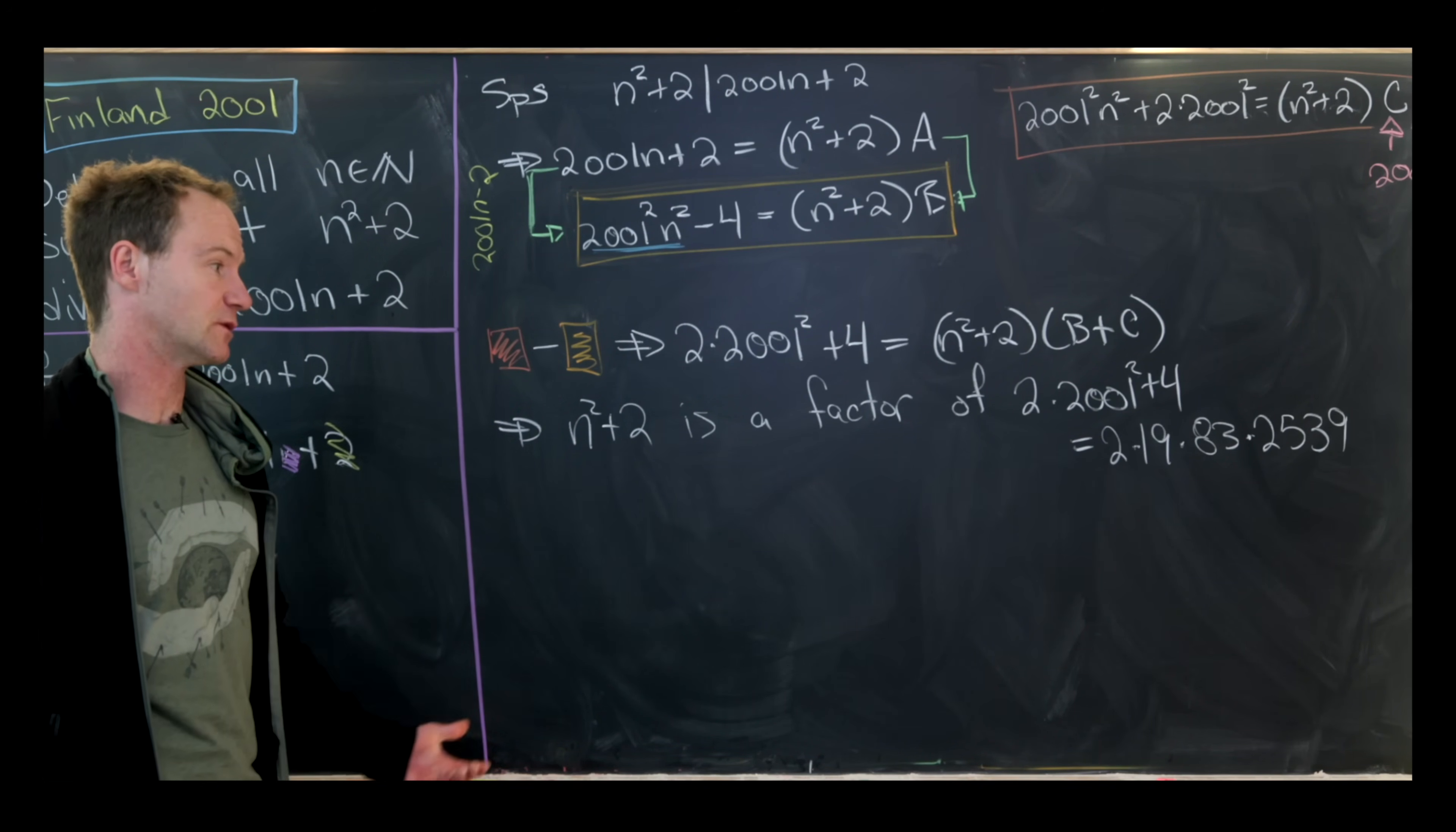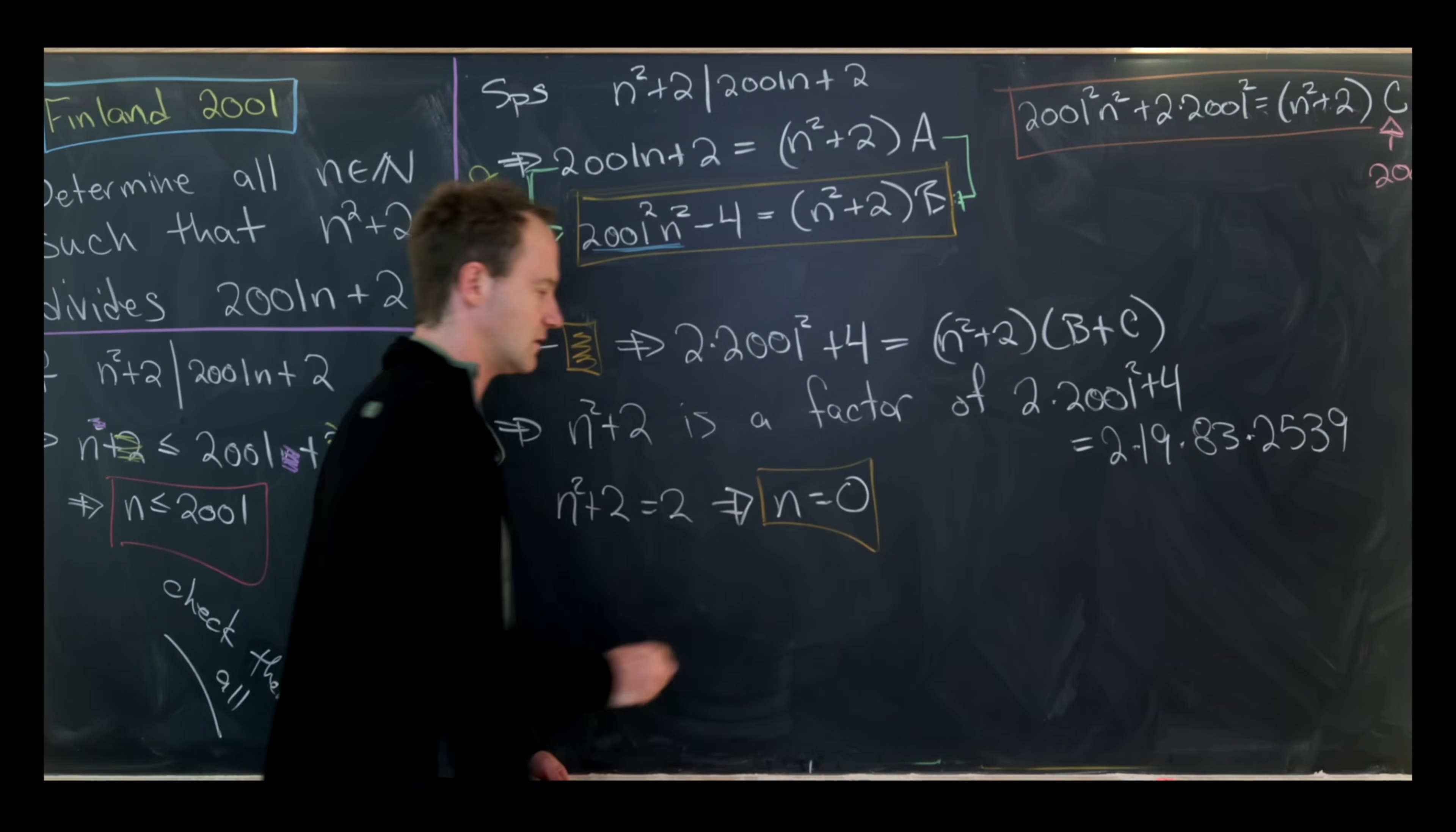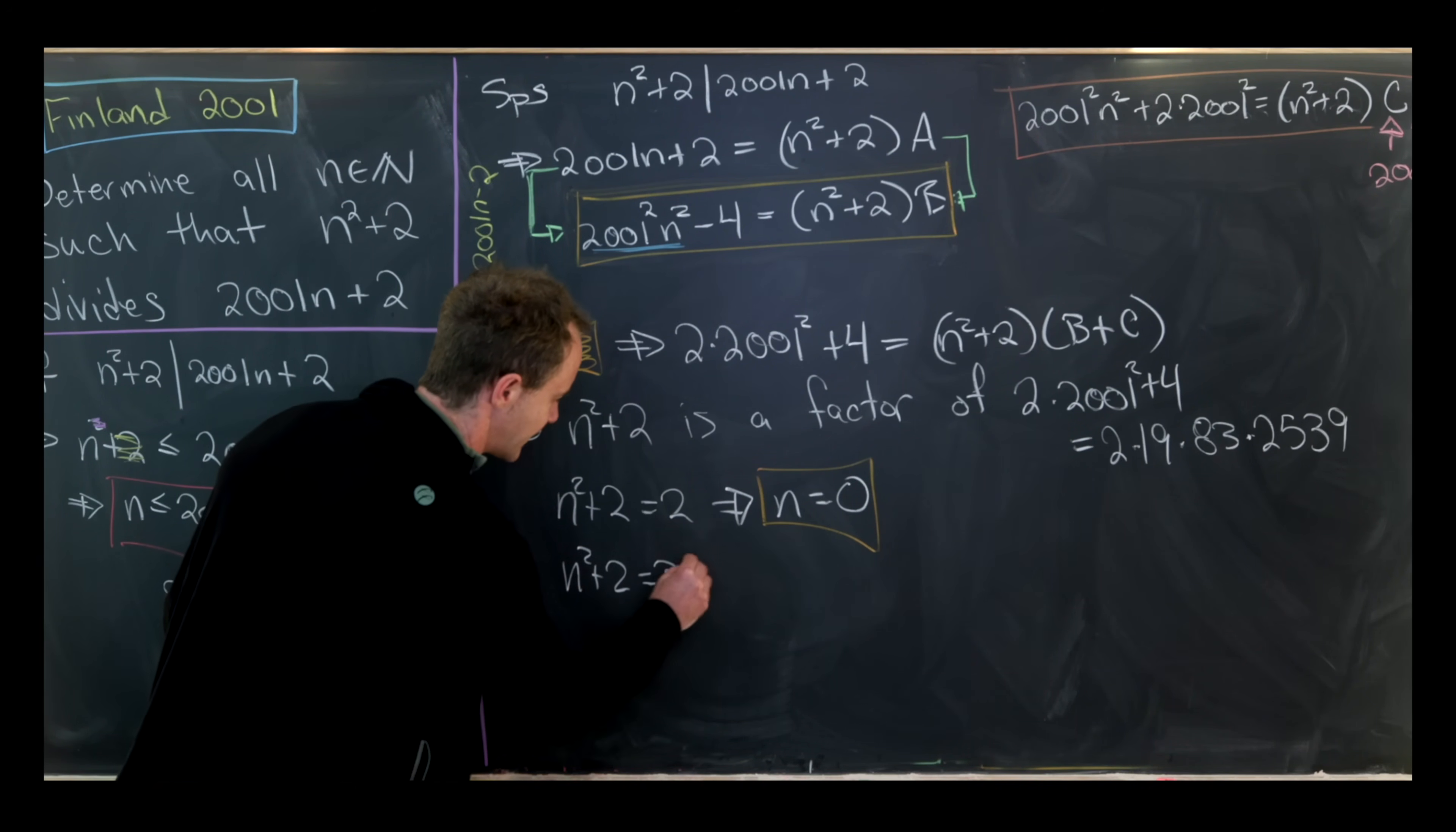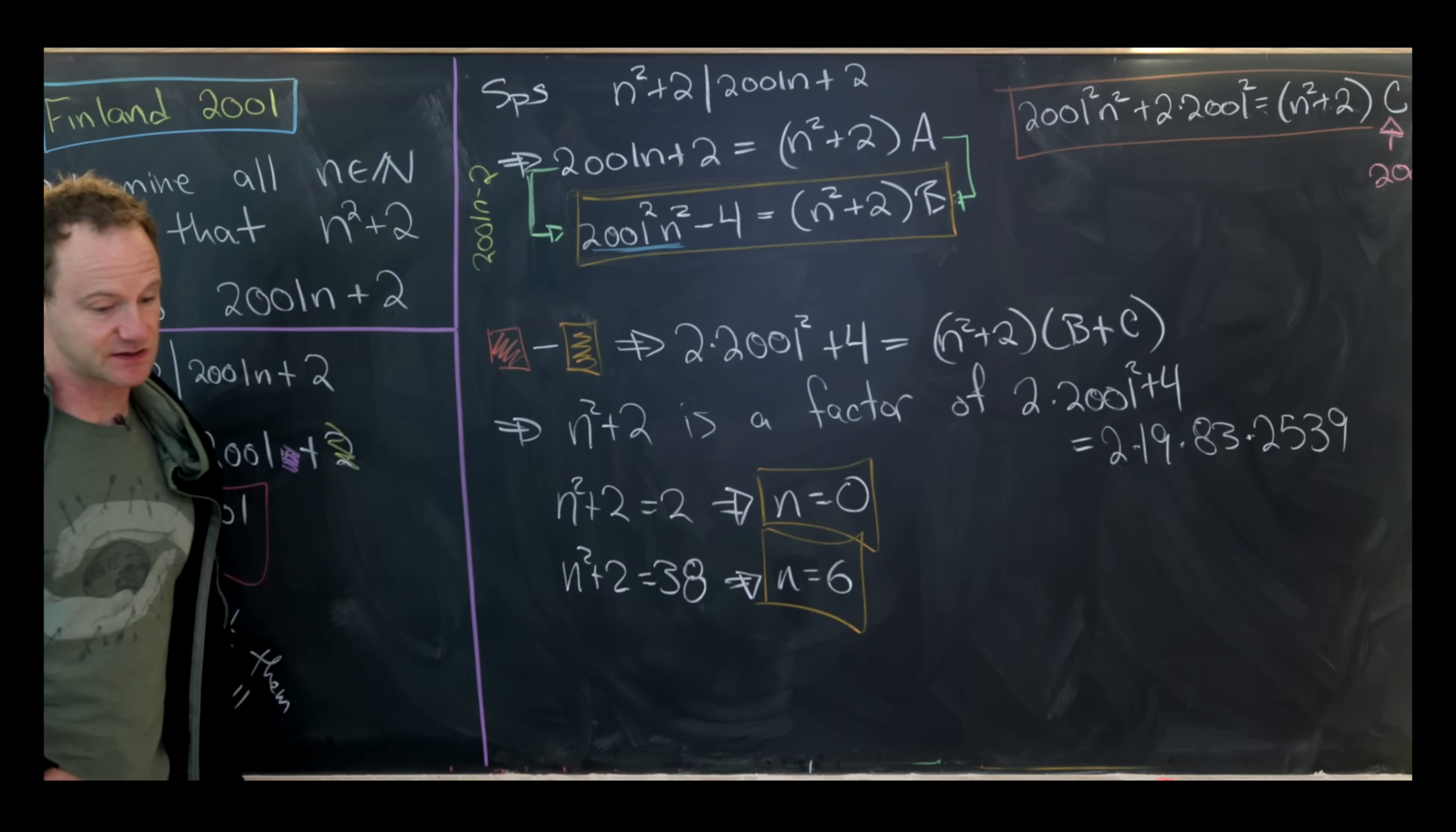So that means that n² + 2 is some sort of grouping of those prime factors. And in fact, only four groupings will produce a solution. The first grouping is n² + 2 equals 2, which means that n equals 0. And longtime viewers of the channel will know that I always take 0 to be a natural number. So the next one that gives us a solution is n² + 2 equals 38, which is 2 times 19. That means n² will be 36 or n equals 6.